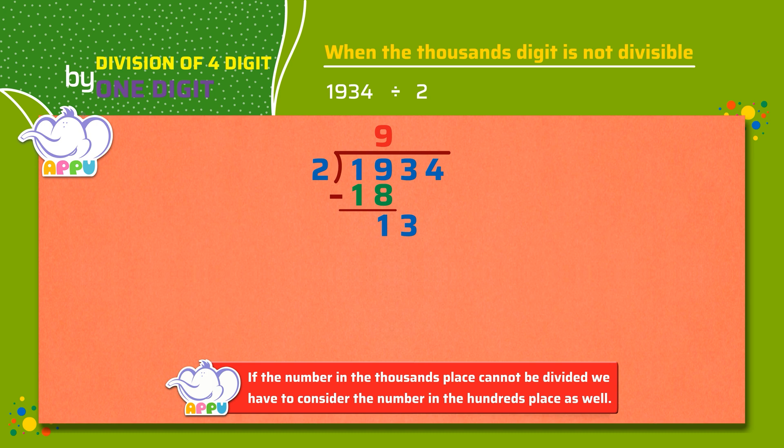We repeat the steps. We divide again. We figure out how many twos does it take to make thirteen or almost thirteen, which is six. We multiply two and six, we get twelve. We subtract twelve from thirteen, we get one.